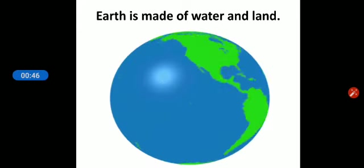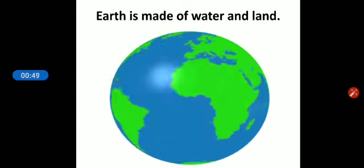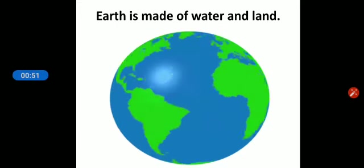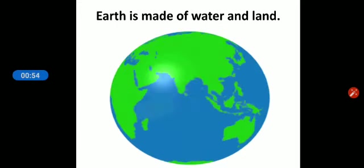Earth is called blue planet because Earth has almost 70 percent water on its surface, due to which it looks blue in color.